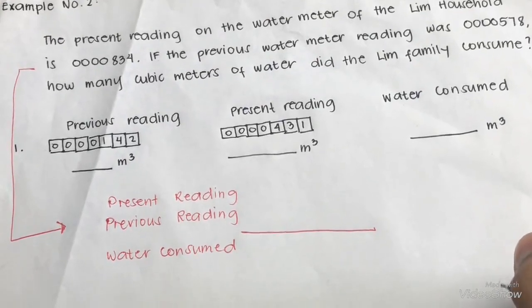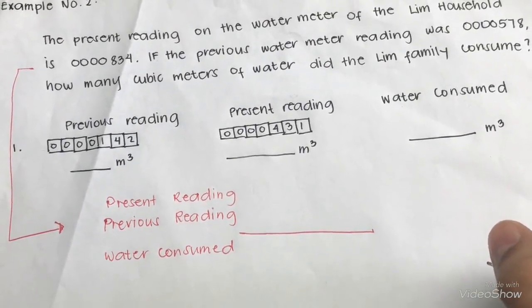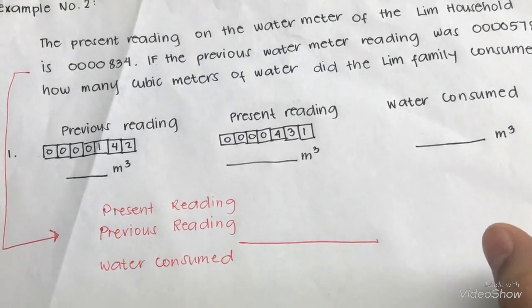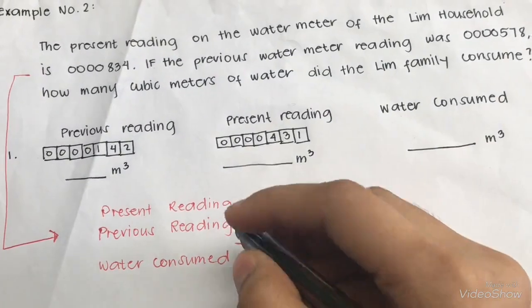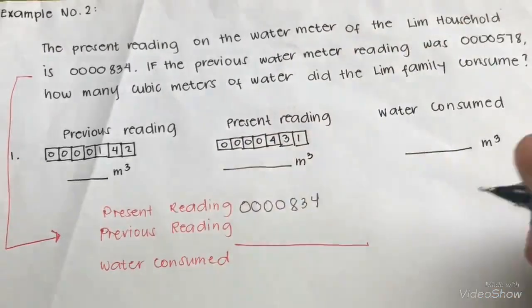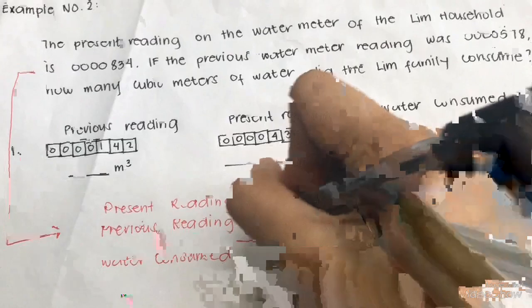Example 2: The present reading on the water meter of the Limb household is 0000834, and the previous reading was 0000578. Subtracting the previous reading from the present reading gives a water consumption of 256 cubic meters.